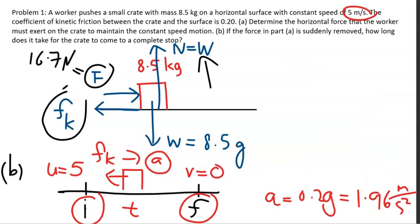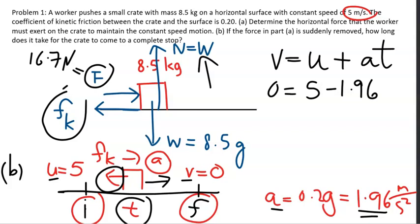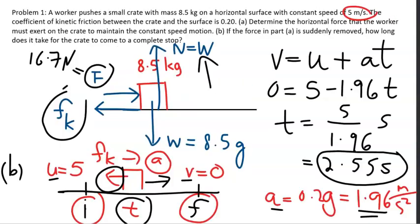We need the right kinematic equation. We know acceleration, final speed, and initial speed, and we need time. Using the first kinematic equation — final speed equals initial speed plus acceleration times time — the final speed is 0, initial speed is 5, and acceleration is negative 1.96 m/s² (opposing motion). Solving gives t = 5 / 1.96 = 2.55 seconds for part B.